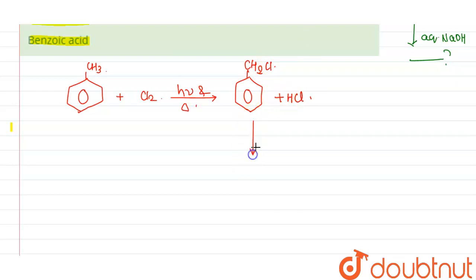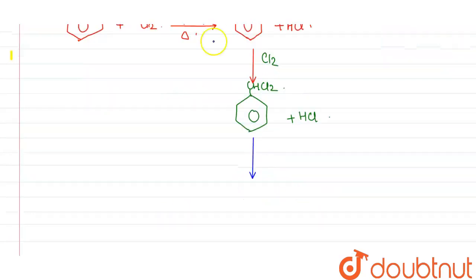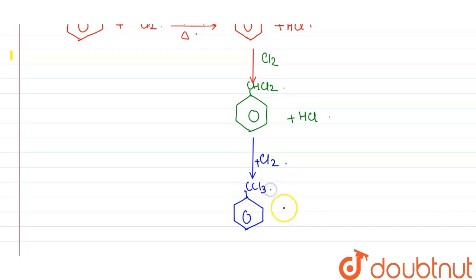Now, again this reaction happens with chlorine molecule and we will be getting CHCl2 along with this HCl. Now, again the same reaction, this hydrogen will be substituted by the chlorine molecules. So, we will be getting CCl3, so all the hydrogen atoms are substituted by the chlorine atoms and this will be the product here. I have said the product will be X, so this is the X that we needed to be formed.